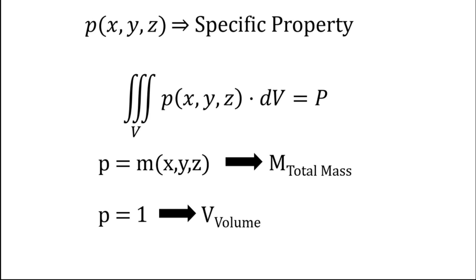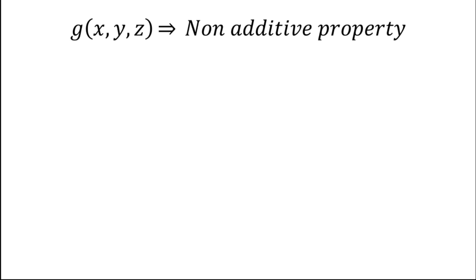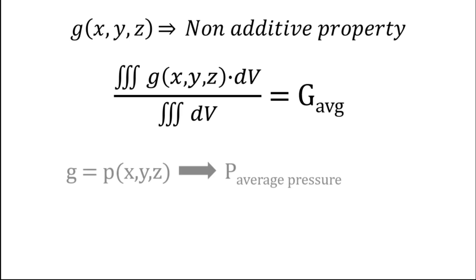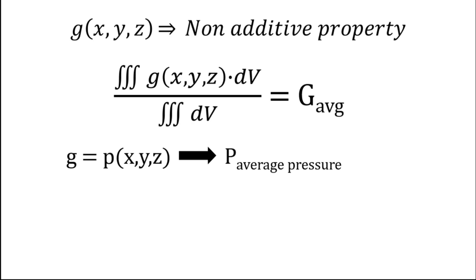But what if the property is not additive? Mass was an additive property, but what if we have some non-additive property like g(x, y, z)? One thing we can get is the average of that property — if we integrate the g function with respect to dV and divide it by the total volume, we get the average of the property.